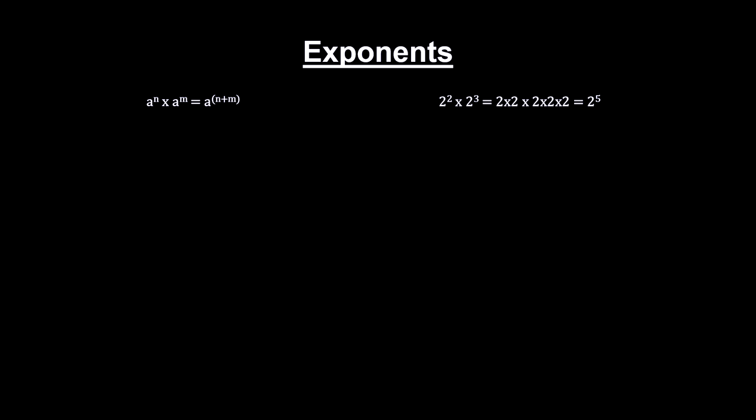We see that when we multiply two numbers with the same base, we can add the exponents. With that in mind, we define a negative exponent to mean one divided by the base raised to the positive value of the exponent. This extends the exponent arithmetic to include all integers.